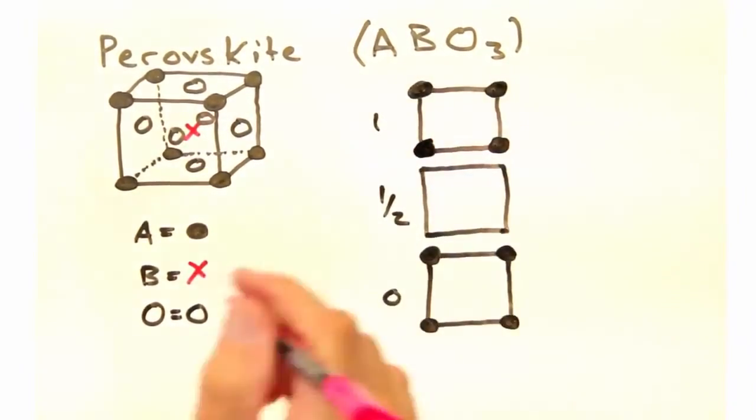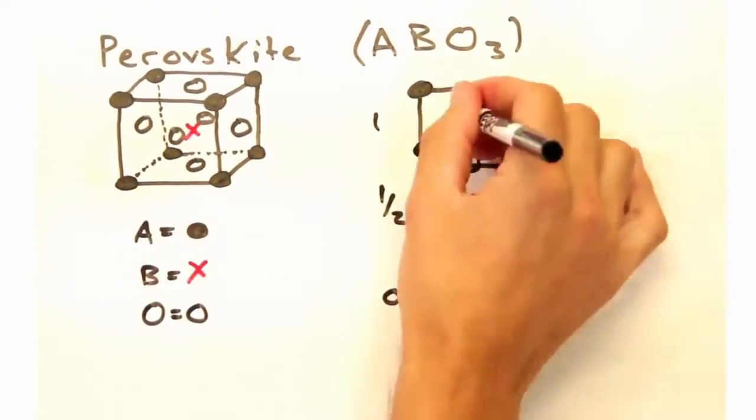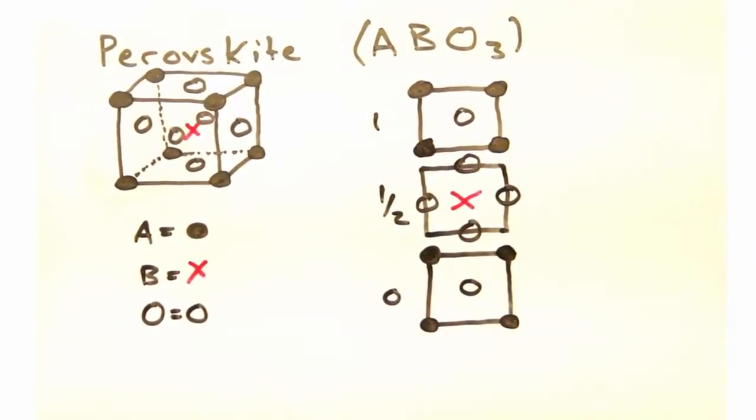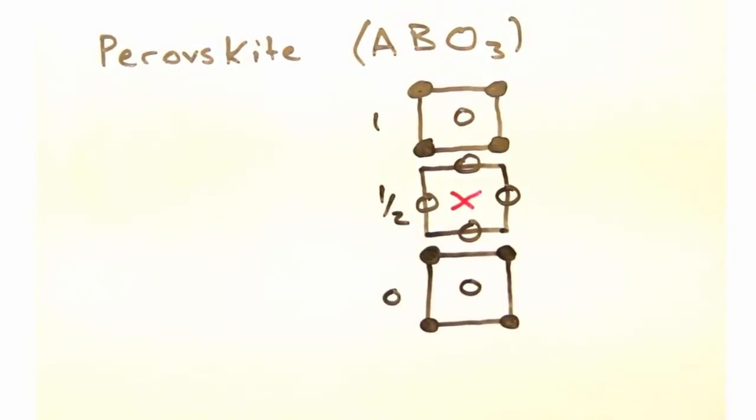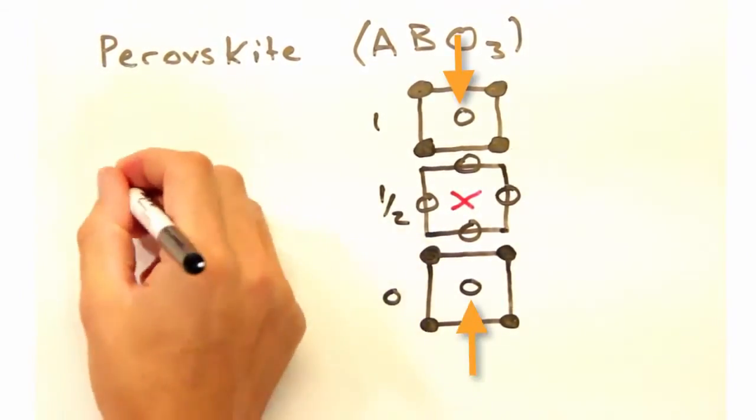Separated out like this, we can try to think about the coordination number for the B atom in the body center. From the slices, we can see that there are six atoms within equal distance of the B atom. Yeah, I think I see them. There's one oxygen atom in the slice above, one below, and four in the same plane.